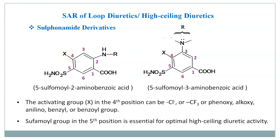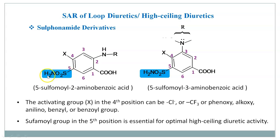The third point is that the fifth position sulphonamide group is essential for optimal high-ceiling diuretic activity. This fifth position SO2-NH2 group plays an important role and must be unsubstituted; it is an essential one.